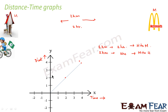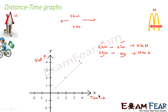When we plot distance with time we plot how much distance is covered in how much time. In this case 2 kilometers was covered in the first 2 hours, and again 2 more kilometers was covered in the next 2 hours, so our graph is a straight line. The points to remember: time is always taken along the x-axis, and distance is taken along the y-axis.